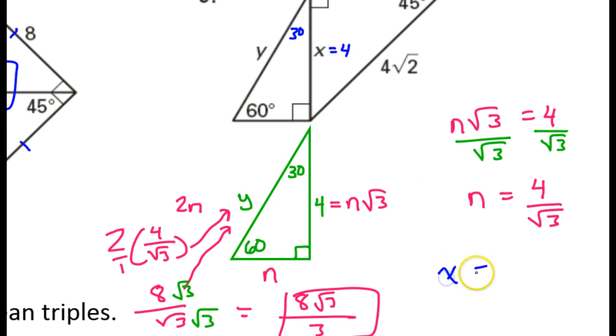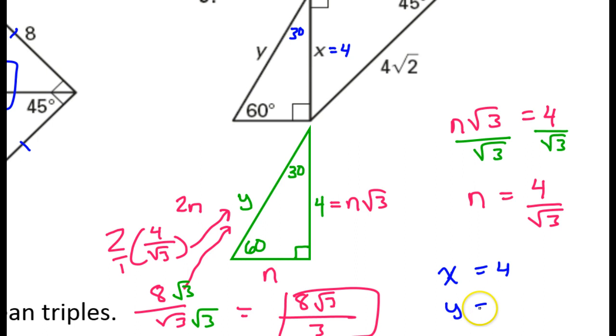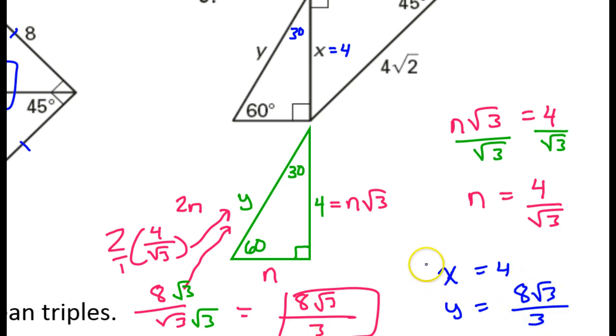Just to summarize: we found x early on, so x was 4. And now we found the value of y, which turned out to be 8 radical 3 over 3.